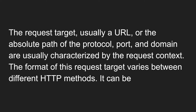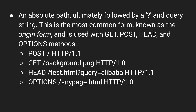The second element is the request target — usually a URL or the absolute path of the protocol, port, and domain, characterized by the request context. The format of the request target varies between different HTTP methods. The most common form is an absolute path followed by a question mark and query string, known as the origin form, used with GET, POST, HEAD, and OPTIONS methods.